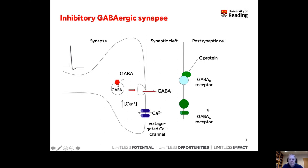GABA can also interact with two different types of receptors. In this case, both of them are always inhibitory. So that's why we say that GABA is our main inhibitory neurotransmitter.